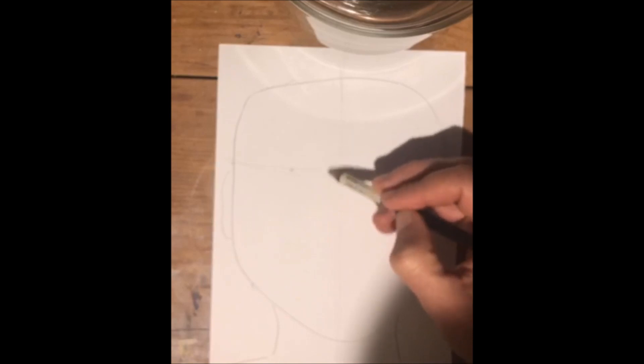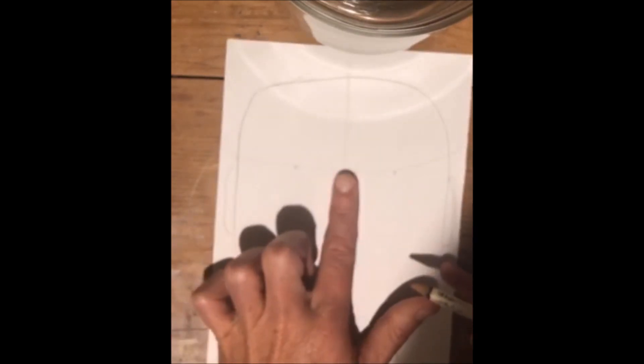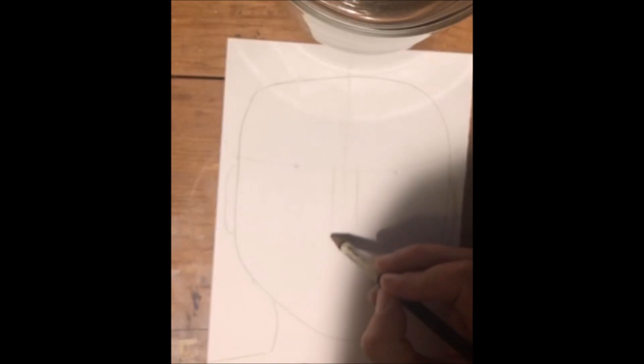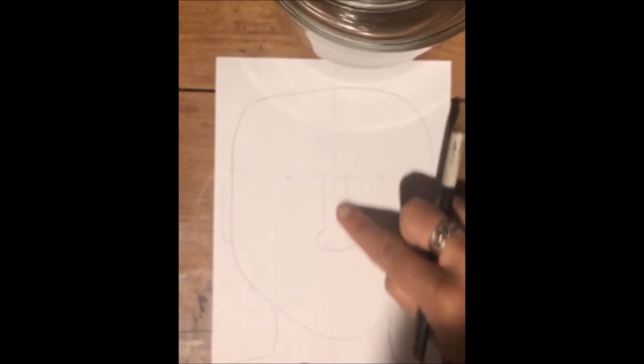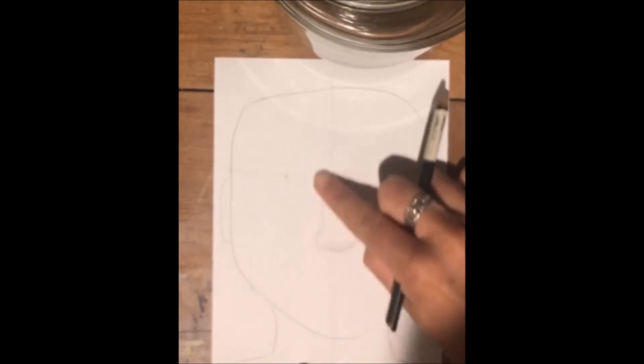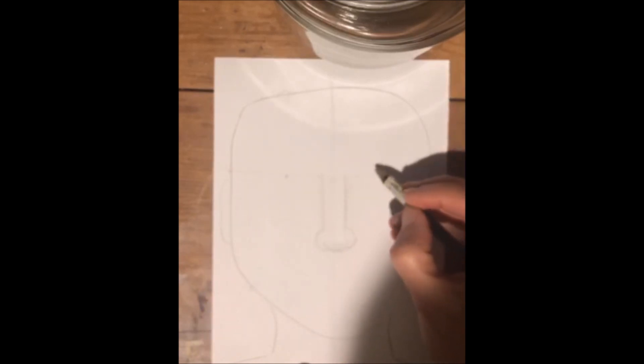Then I'm going to put in my nose first, which we practiced. Make sure that line's in the middle. I put my two train tracks on either side of that line about the width of my finger. I want my smiley face at the bottom, my letter C on one side, and my letter backward C on the other side. Give that a little smudge.